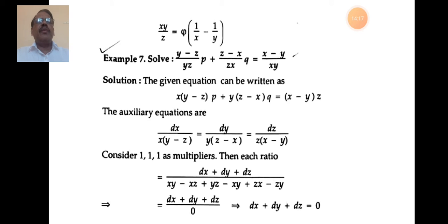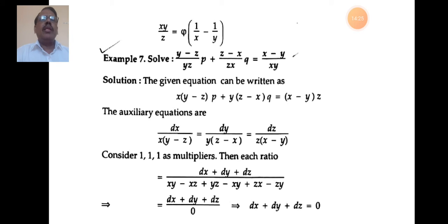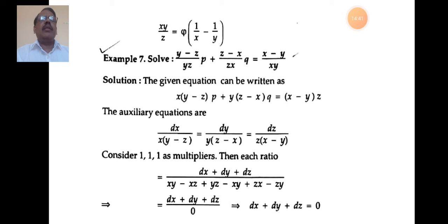Next problem: solve the equation (y−z)/(yz)·p + (z−x)/(zx)·q = (x−y)/(xy). To simplify, multiply the given equation by xyz on both sides. The first term: yz cancels leaving x(y−z); the second term: zx cancels leaving y(z−x); the right-hand side: xy cancels leaving z(x−y).